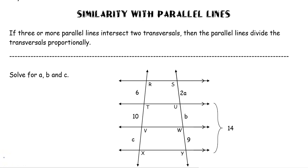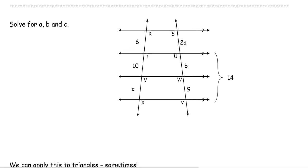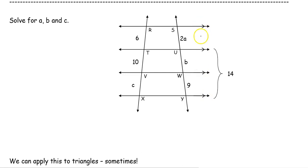Today's video is going to look at similarity and how similarity plays a role when parallel lines get involved. If three or more parallel lines intersect two transversals, then the parallel lines divide the transversals proportionally. In this case we have four parallel lines, and the transversals are the lines being cut through those parallel lines. They are going to be divided proportionally, which allows us to set up ratios and proportions to solve for missing pieces.